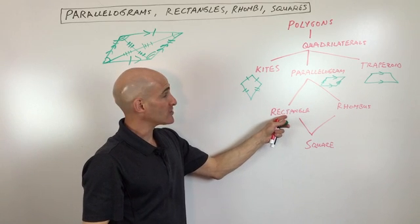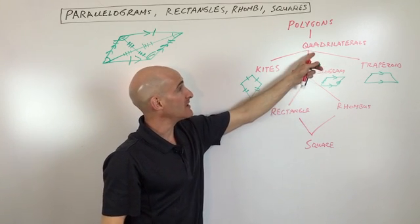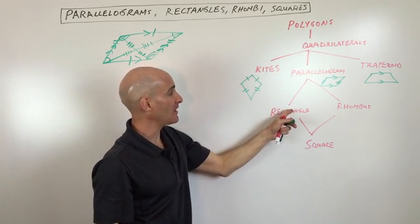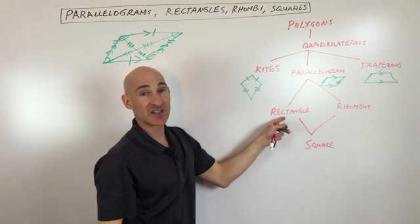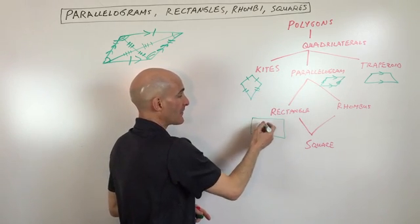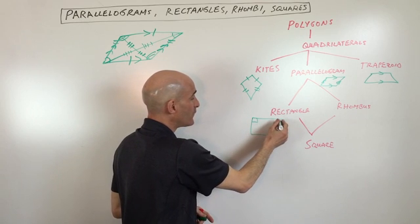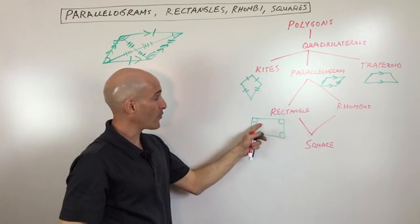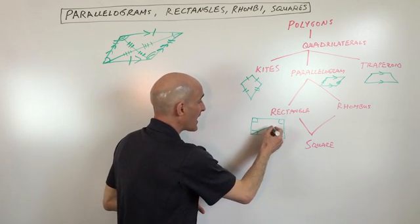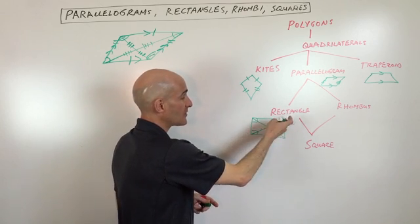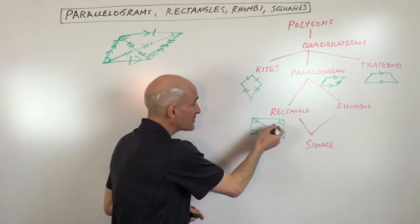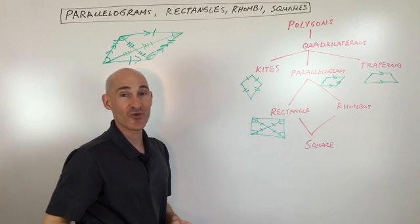When you go down to rectangles, a rectangle is a parallelogram, it is a quadrilateral, it is a polygon — so it has all the properties of the ones above it on the tree. But in addition, a rectangle has four right angles, four 90-degree angles. Also, a rectangle has congruent diagonals — this diagonal is the same length as that diagonal. Because the diagonals bisect each other in a parallelogram, all four resulting pieces are going to be congruent.